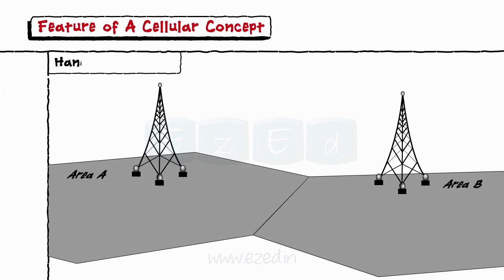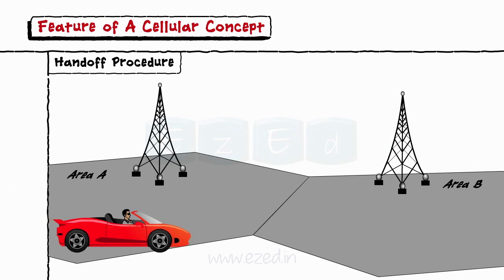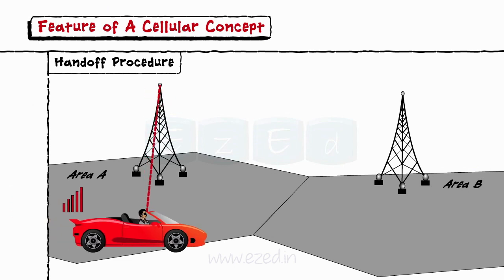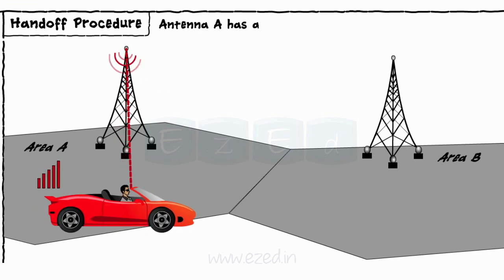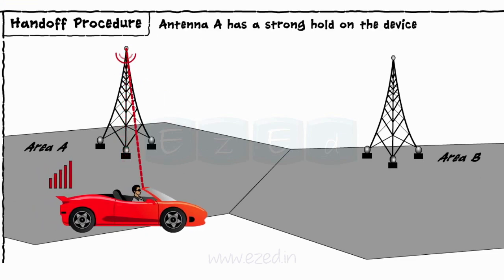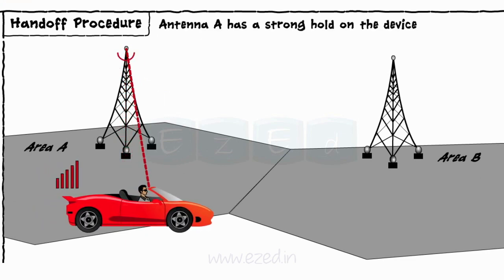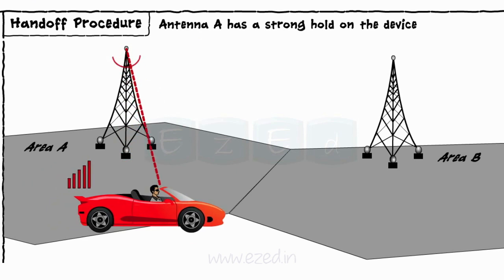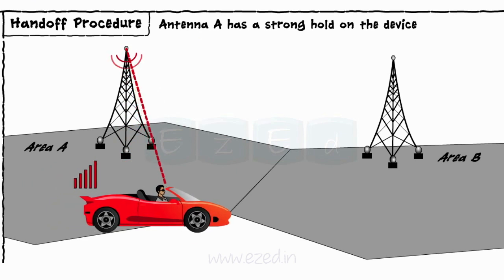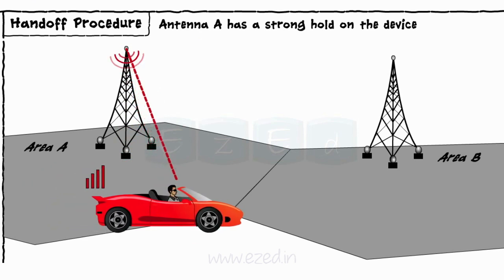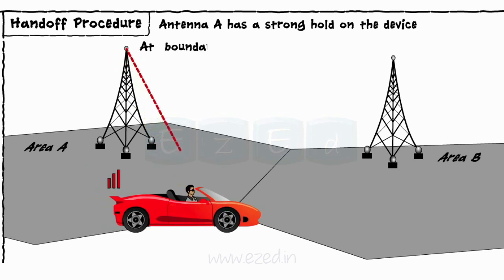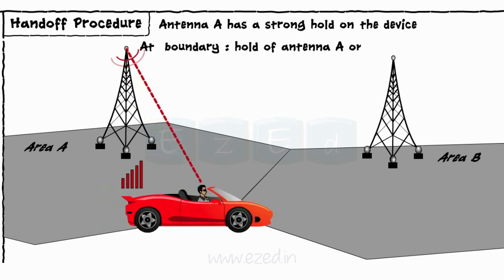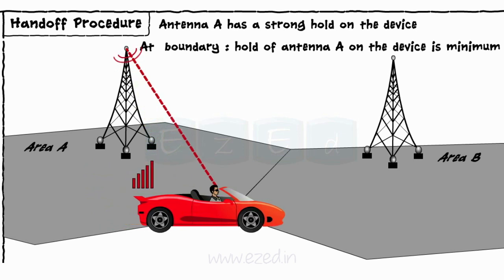When a user X travels in area A, he receives the signal from base station A — that is, antenna A has a strong hold on the device's signal. But as he moves away from antenna A, the signal strength gradually decreases. At the boundary of cell A, the hold of antenna A on the device is at its minimum.